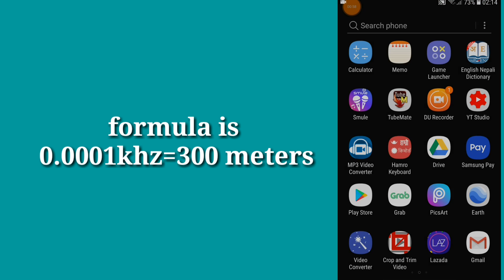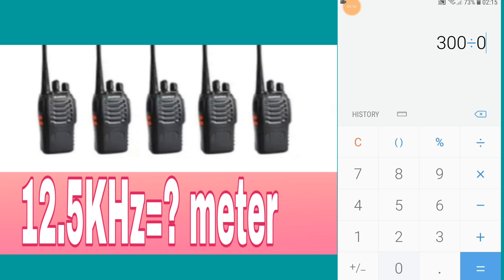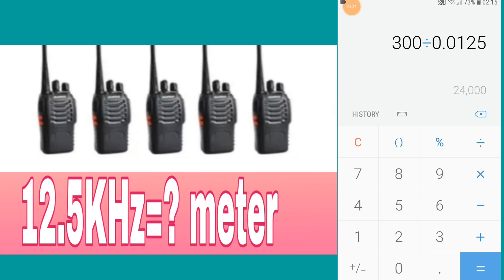Ok, let's open the calculator. Type 300 — that is our formula value — and press divide, then press the frequency: 12.5. So 12.5 kilohertz is our total frequency.